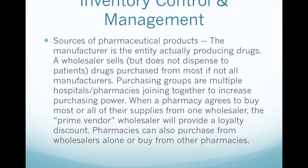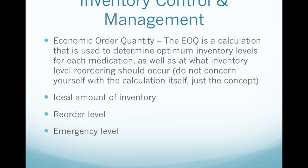Economic Order Quantity. The EOQ is a calculation used to determine optimum inventory levels for each medication, as well as at what inventory level reordering should occur. Do not concern yourselves with the calculation itself, just the concept. Key levels are the ideal amount of inventory, the reorder level, and the emergency level.